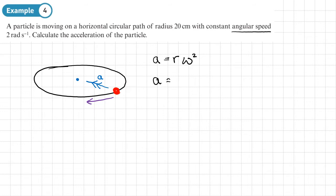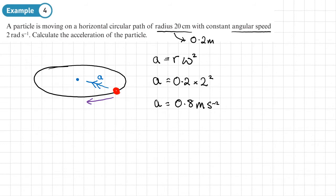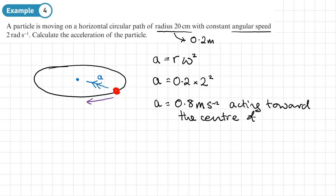A equals 0.2 — the radius of 20 centimeters converted to meters — times by omega, which is 2 squared. So A equals 0.8 meters per second squared. That acceleration is acting towards the center of the circular path.